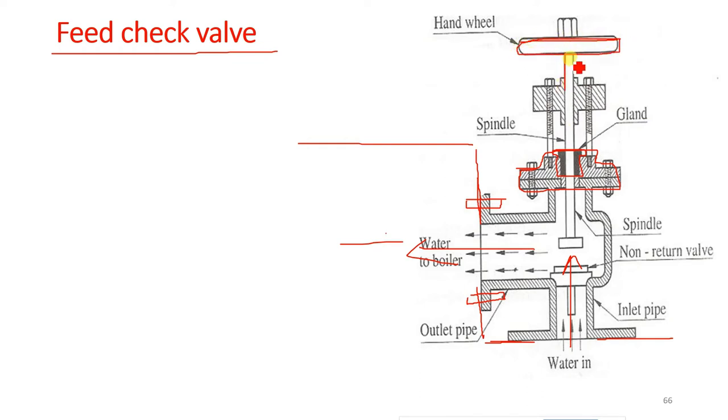The rotating handle is supported with the help of yolk and stays. This spindle has outer threads and the gland has inner threads. This spindle rotates inside the gland and moves in the upward and downward direction and valve attaches.